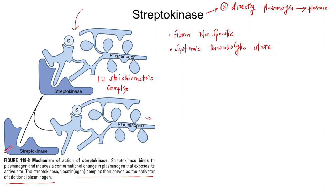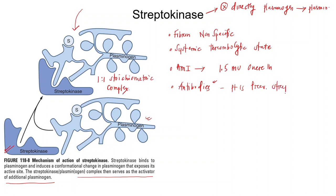That is the reason it is associated with higher bleeding tendencies. It is used in acute myocardial infarction and the dose is 1.5 million units given over one hour. Patients may develop antibodies against it — it is immunogenic. Antibodies may also develop if the patient previously had a streptococcal infection. These antibodies will reduce the effectiveness of streptokinase, and rarely anaphylaxis can also occur.